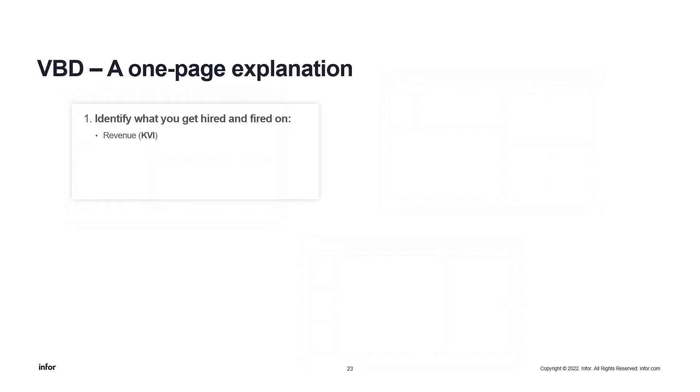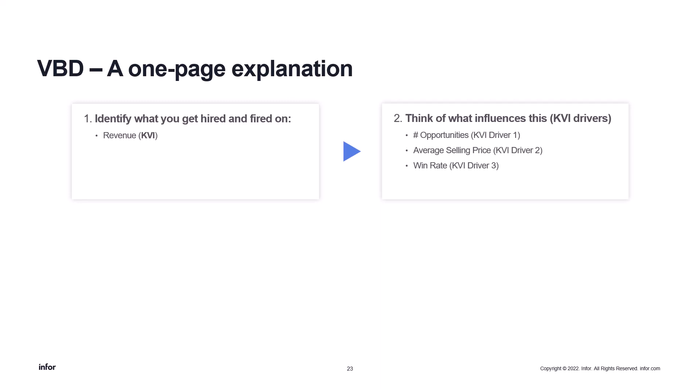Let's recap what we've learned. We'll start with a one-page explanation of Value-Based Design. The first step is to identify the number one figure — the KVI, the key value indicator. In this case we are talking about sales, and the KVI is revenue. Next step is the KVI drivers — what is influencing our key value indicator. We have number of opportunities, average selling price, and win rate.